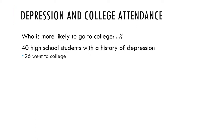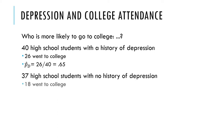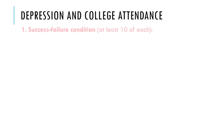So who's more likely to go to college? Let's say P-hat sub D is the proportion for the depressed sample — specifically, people with a history of at least one depressive episode. 26 out of 40 in this sample went to college, which is a proportion of 0.65. For the high school students with no history of depression, 18 of 37 went to college, so the proportion is 0.486. It certainly looks like the depression group is more likely to go to college, but it's a small sample — let's see what happens.